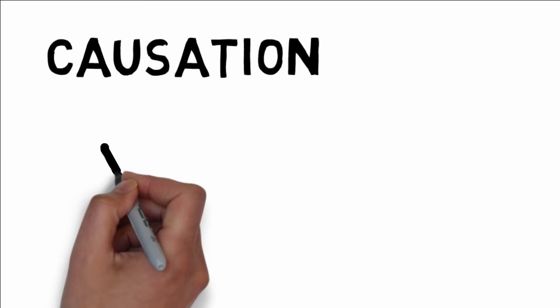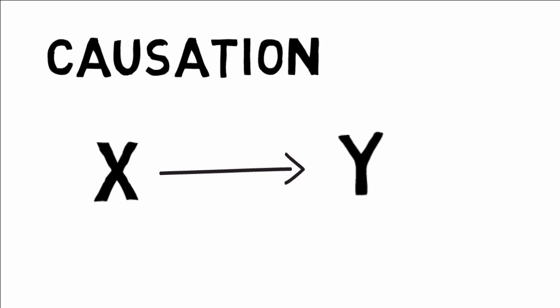Unlike correlation, causation is when you can claim that one thing causes another thing to happen. In order to make this claim, you need to be able to demonstrate an actual cause-and-effect relationship, preferably a strong relationship.